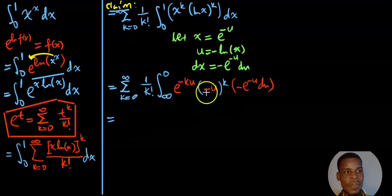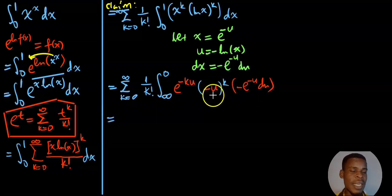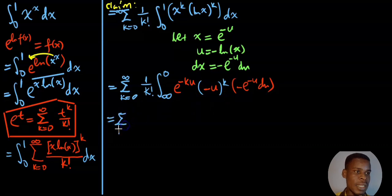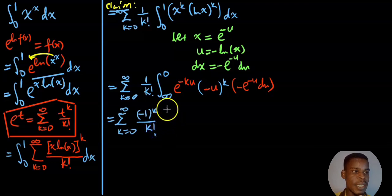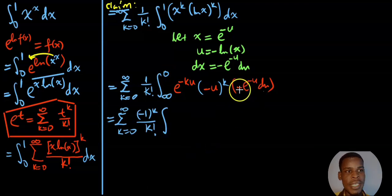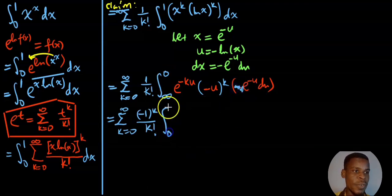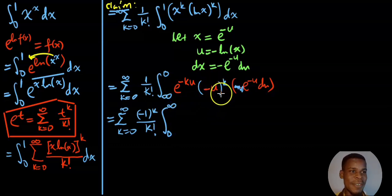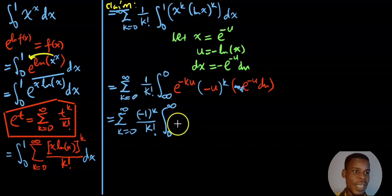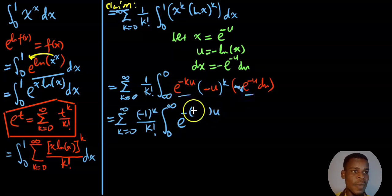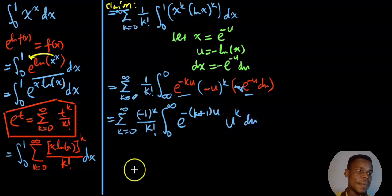Now let's pull out some things. This negative u is the same as negative 1 raised to the power of k times u raised to the power of k. I'm taking out the negative 1 to get negative 1 raised to the power of k, divided by k factorial. Then I use the minus 1 to switch the order of integration from 0 to infinity. I also factor out the negative from the exponents, combining e to the negative u and e to the negative ku, giving e to the negative (k+1)u times u to the power of k du.